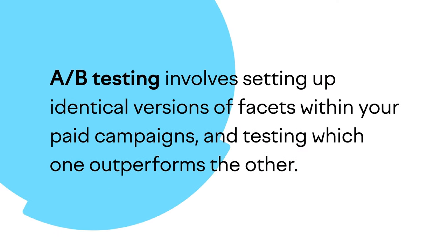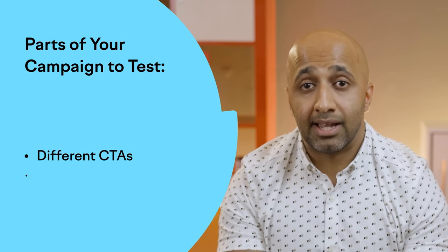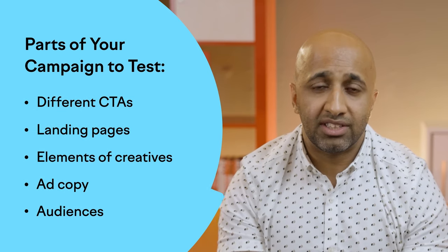Let's discuss an essential conversion optimisation strategy you can implement right away to boost your PPC success: A/B testing. In short, this involves setting up identical versions of facets within your paid campaigns and testing which one outperforms the other. A/B tests, or split testing as they're also known, are seen as vital for sustainable, long-term PPC success — because you can demonstrate to the boardroom which variable is driving more conversions and profit. With PPC, you've got a great level of flexibility in what you can test, for example: different CTAs, landing pages, elements of creatives, ad copy, or audiences, just to name a few.